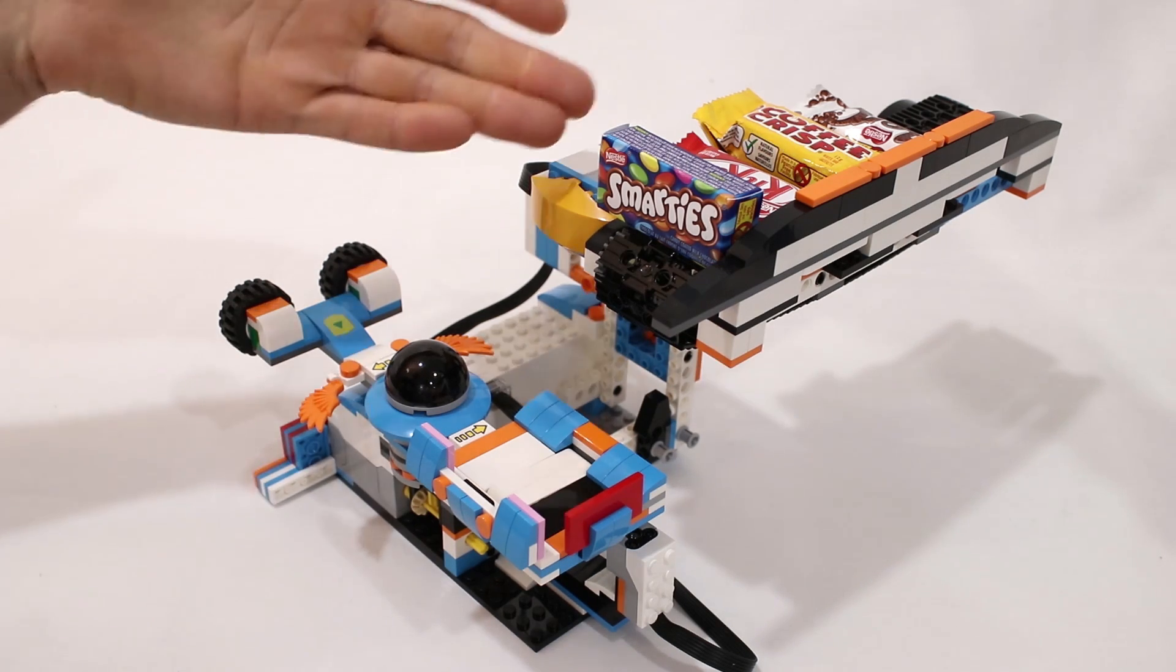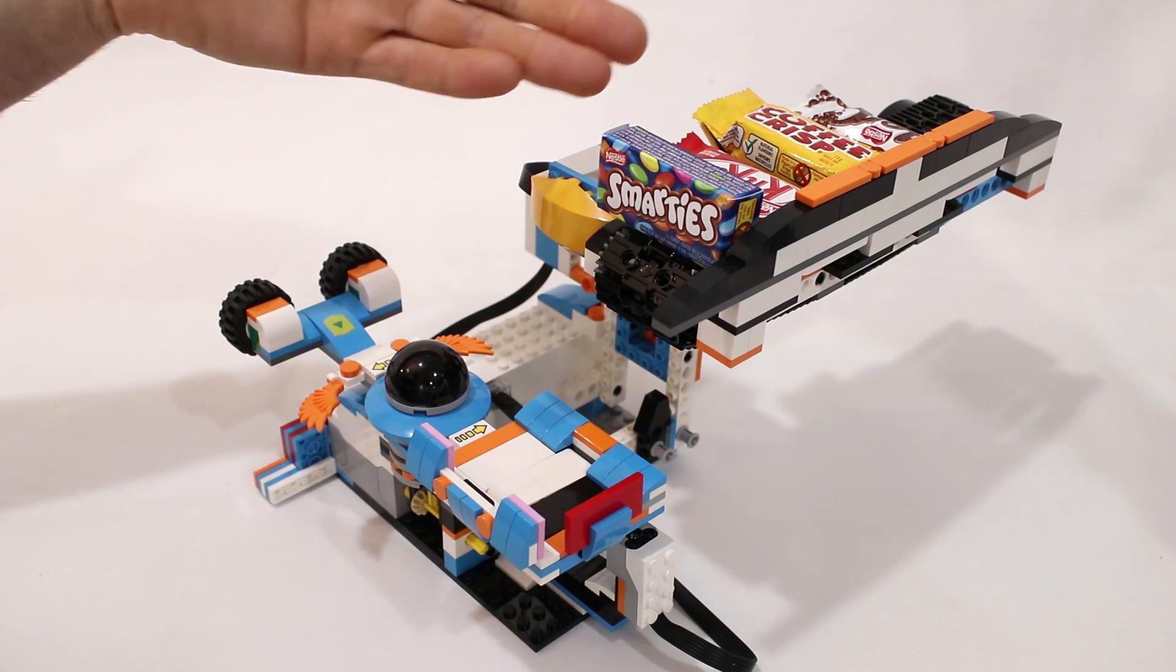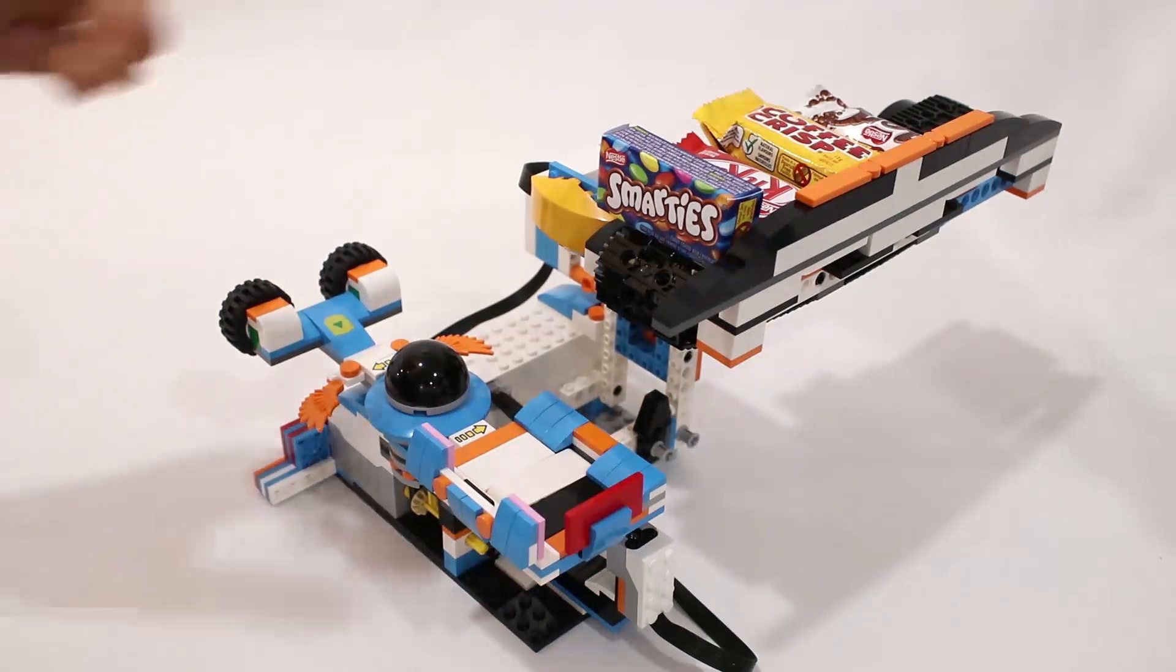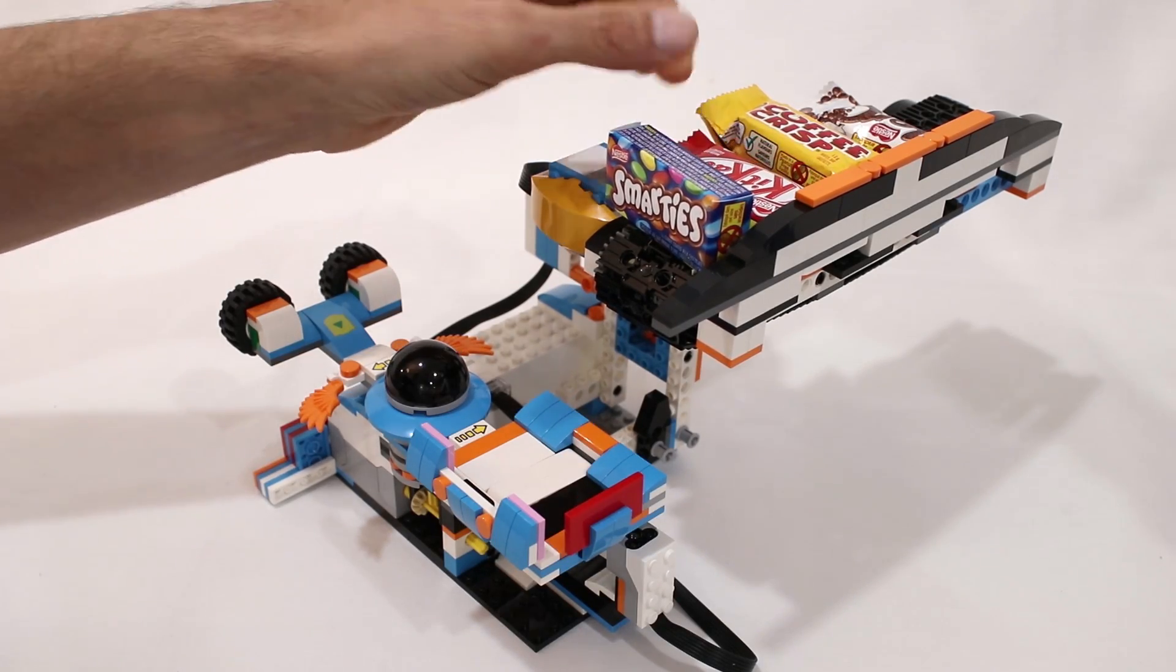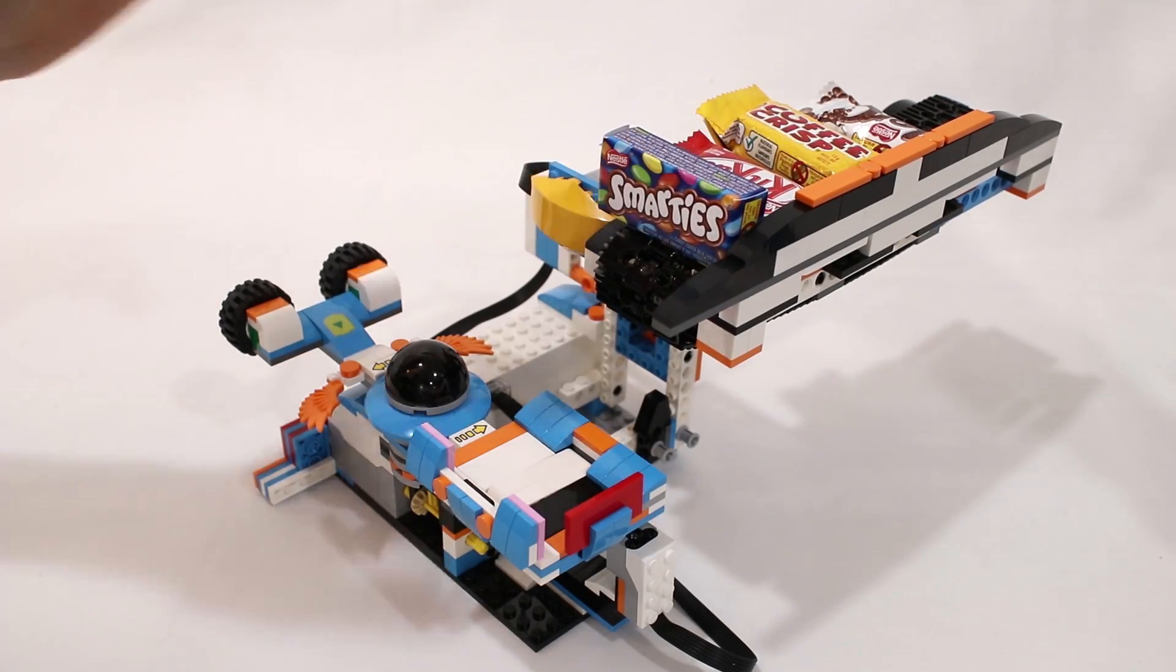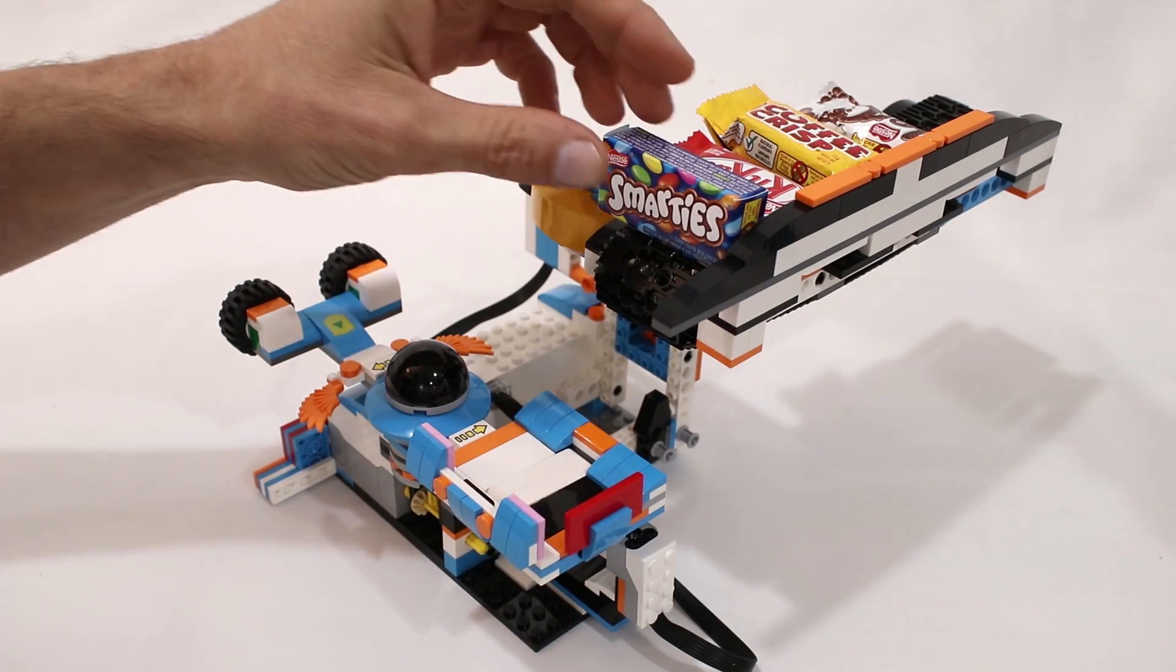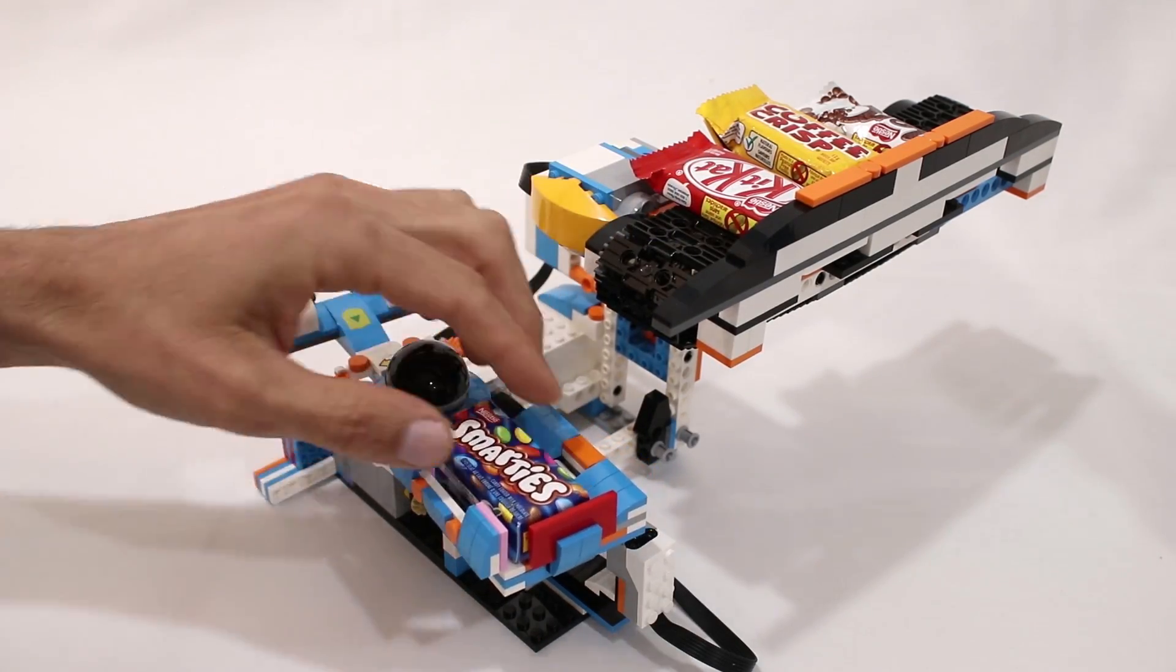The only other thing you need is some kind of ammunition. In this case, much like previous years, I'm using these mini chocolates which are readily available in Canada this time of year, but really you can use anything about the same size that fits on the conveyor belt and fits in the launch tray here.